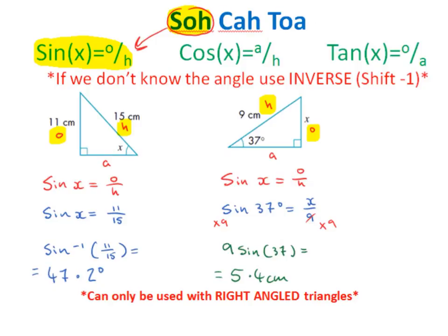SOHCAHTOA is a formula that we use for sine, cosine and tan functions on the calculator to help us find unknown angles or unknown sides in right-angled triangles. SOH is short for sine of x equals opposite divided by hypotenuse. CAH is short for cos of x equals adjacent divided by hypotenuse. And TOA is short for tan of x equals opposite over adjacent.